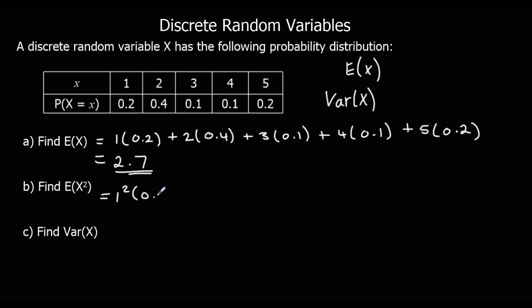So it's 1 squared times 0.2, plus 2 squared times 0.4, plus 3 squared times 0.1, plus 4 squared times 0.1, plus 5 squared times 0.2. And that should give us 9.3.